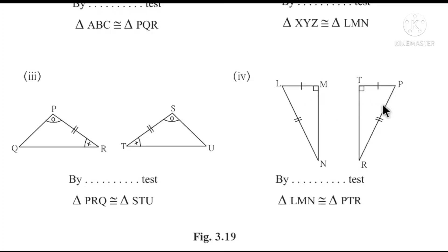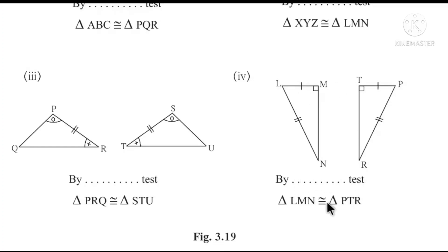Fourth pair: right-angle triangles are congruent. The hypotenuse marking is congruent and sides are congruent. Therefore, by the Hypotenuse-Side test, triangle LM is congruent to triangle PTR.